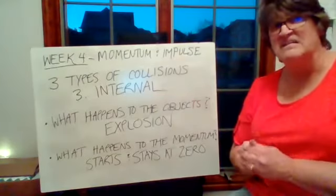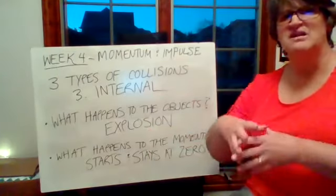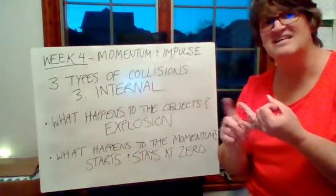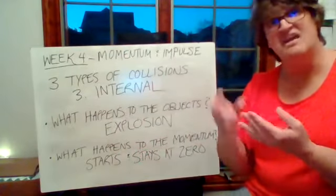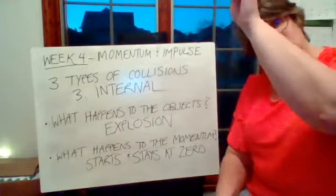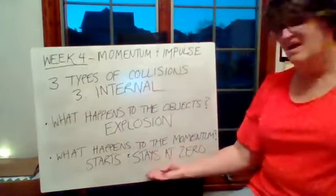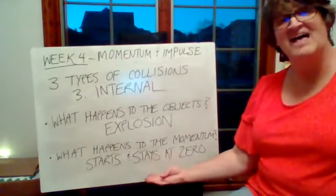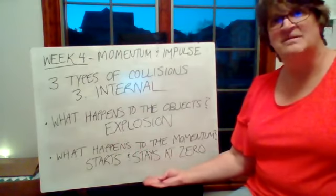Something happens on the inside, there's an explosion, pieces go flying in every direction. They have different masses, different velocities. But when we do m times v, m times v, one's a positive, one's a negative. Since it started at zero, they have to stay at zero. And when you add those up, they end up being zero.